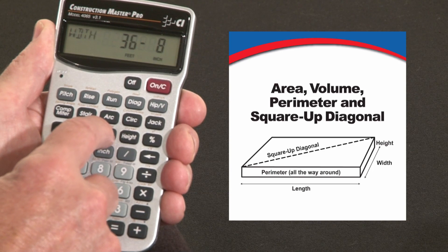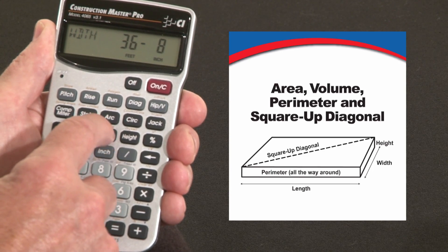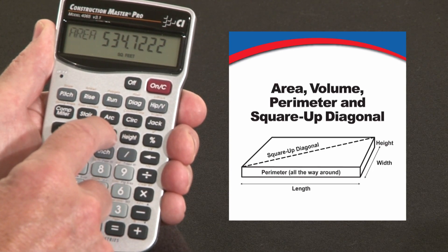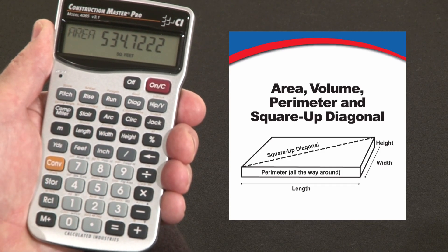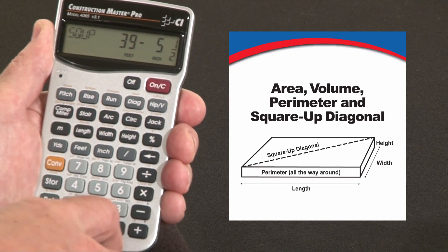I can come back to the width key. It confirms the width that we entered, 36 feet 8. Second press gives me the surface area, 534 square feet. I can press it again. It gives me the square-up diagonals.